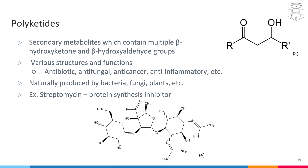Polyketides are secondary metabolites which contain multiple beta-hydroxyketone or beta-hydroxyaldehyde groups. Over the scaffold, there can be a variety of structures and thus a variety of functions, including but not limited to antibiotic activity. Not all antibiotics are polyketides, and not all polyketides are antibiotics. All polyketides, however, are naturally produced by bacteria, fungi, and plants. One example of an antibiotic polyketide is septomycin, which inhibits cell growth by inhibiting protein synthesis.